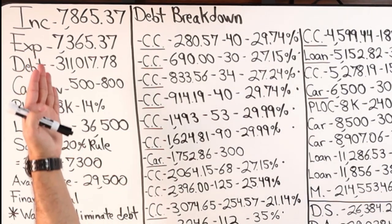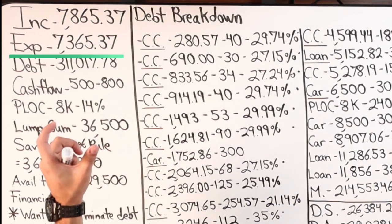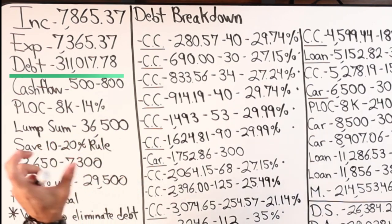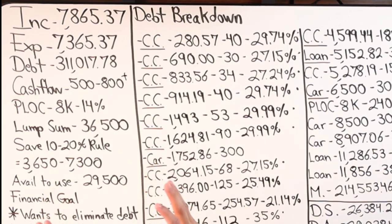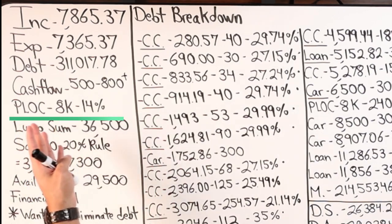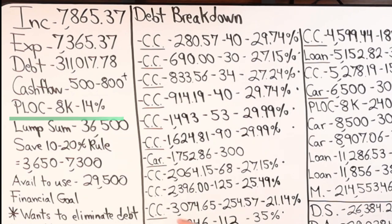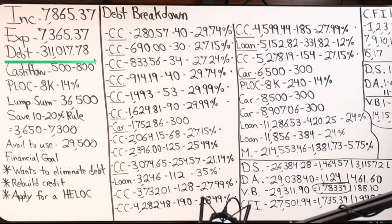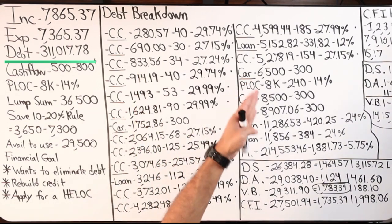To give you some context, here are the four major numbers. We have income at $7,865.37 per month. Total expenses: $7,365.37. Total debt over $300K. We're fluctuating as low as $500 a month in cash flow, could be upwards of $800 and up. This person has a business — I'm dealing with a husband, so this is all of his income. We have a personal line of credit, unsecured, revolving, calculated simple interest at a bank. $8,000 is the credit limit, 14% is the interest rate. You're going to see all of the debts broken down — credit card debts, personal loans, car loans, and a mortgage — totaling $311K.